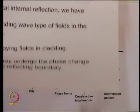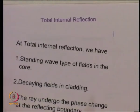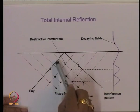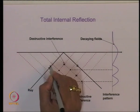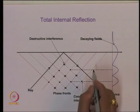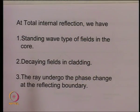A third important aspect not explicitly seen yet is that when the ray undergoes total internal reflection at the boundary, there is a phase change at the reflecting point. Two rays very close to each other — just before and just after reflection — have a phase difference that depends on the launching angle, the refractive indices of core and cladding, and other parameters.